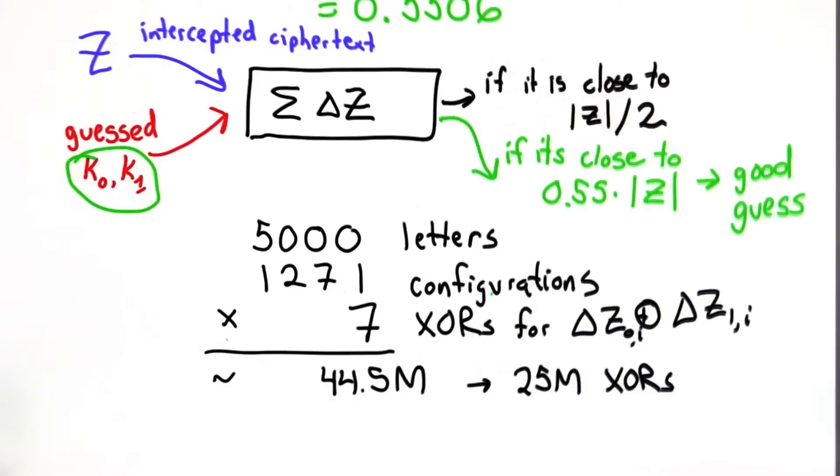Once we've got K1 and K0, we can do similar things to find K2, K3, and K4, and then we can decrypt the whole message.